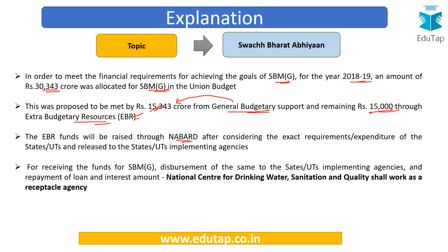The extra budgetary resources are funds raised through NABARD — the apex institution for rural development — after considering various banks. Public sector banks under NABARD's consideration will raise a soft loan for this, repayable after a tenure of 10 years. For disbursement of SBM Grameen funds to states and union territories, the receptacle agency is the National Centre for Drinking Water Sanitation and Quality (NCDWSQ).